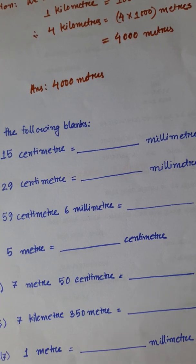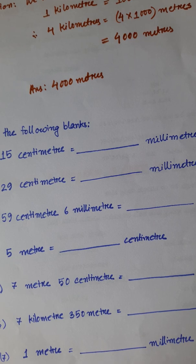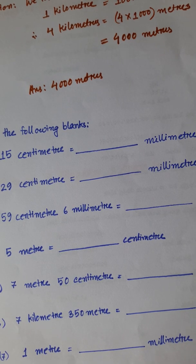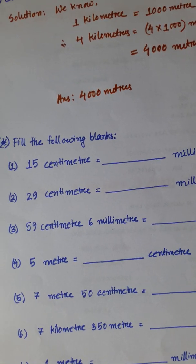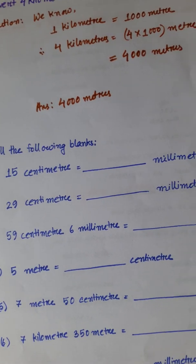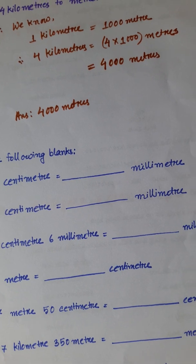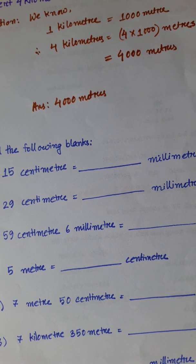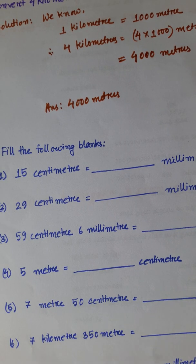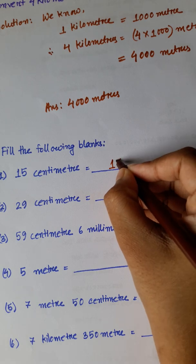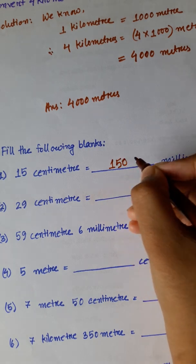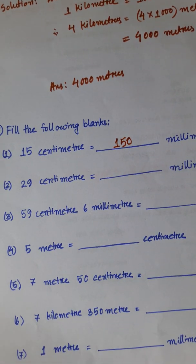Now some fill in the blanks. Number 1: 15 centimeters is equal to dash millimeters. We know 1 centimeter is equal to 10 millimeters, so 15 centimeters is equal to 15 into 10, that is 150 millimeters. Number 2: 29 centimeters is equal to dash millimeters.